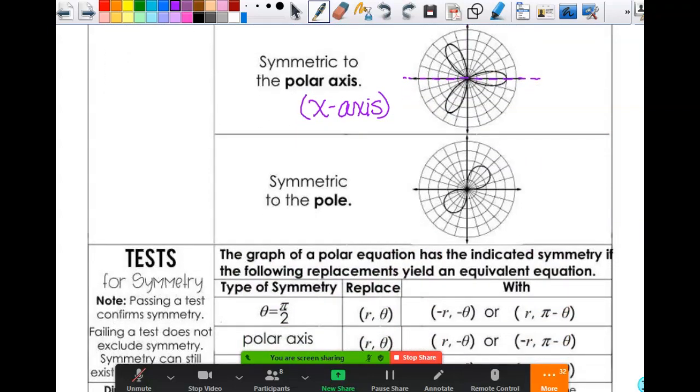This one is symmetric to the pole. That is the same as being symmetric to the origin. When something was symmetric to the origin, we could rotate it 180 degrees and then the graph would look the same. If I took this and rotated it 180 degrees, it would look the same. There's your symmetry to the pole. Easy enough? This is technically not new. It's just talking about polar stuff.